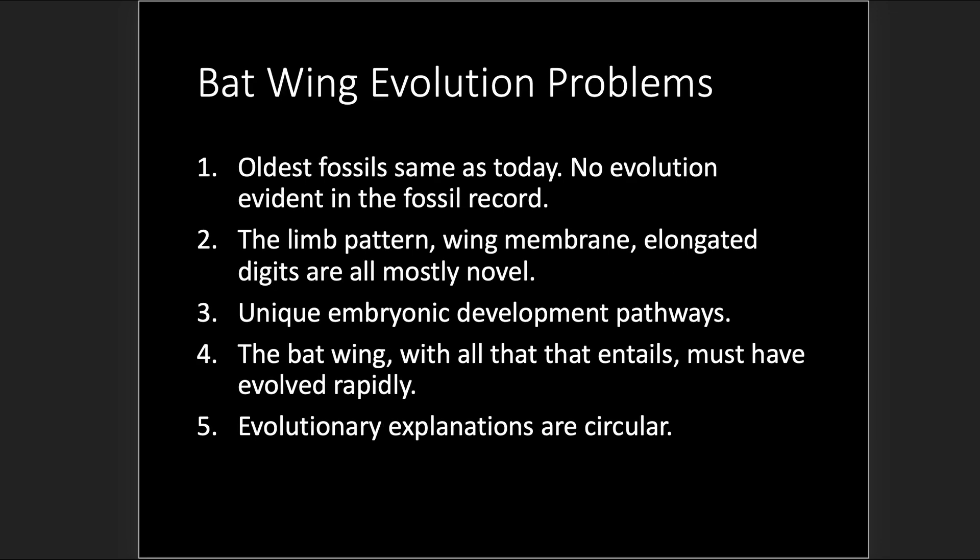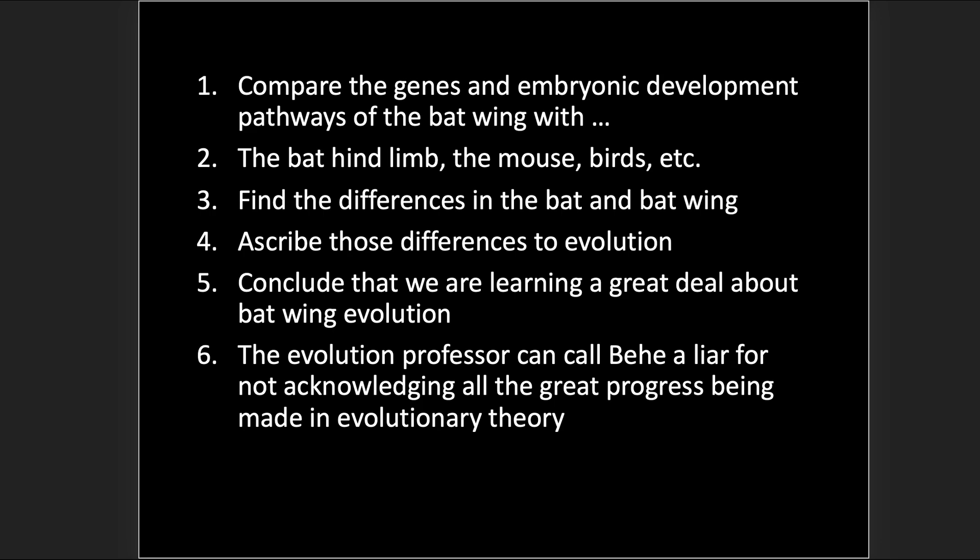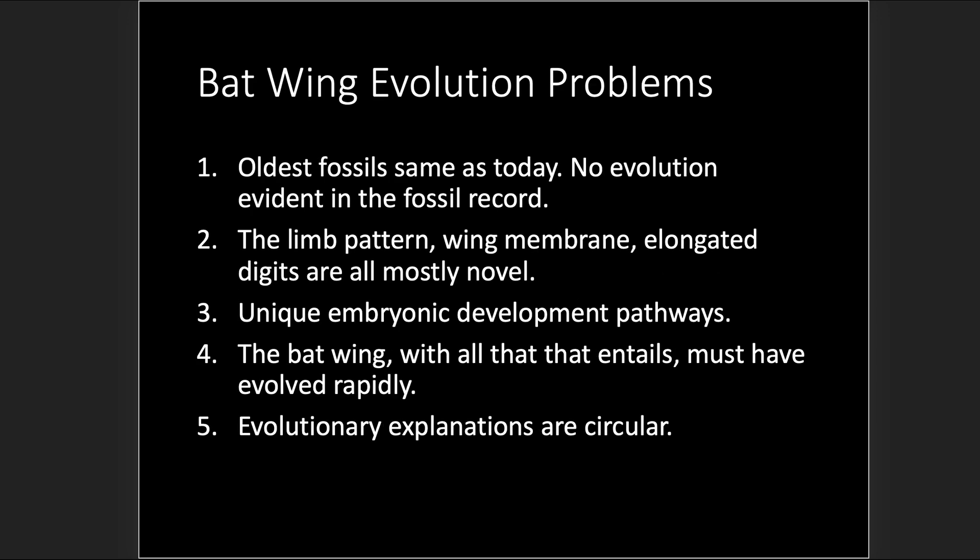Evolutionary explanations are circular. They're assuming evolution happened to begin with, so whatever changes are found in the bat wing — oh, they evolved, that's evolution, now we know how evolution works. Problem number five: evolutionary explanations are circular.